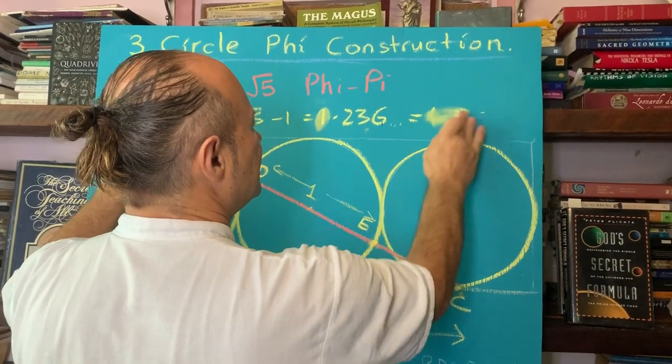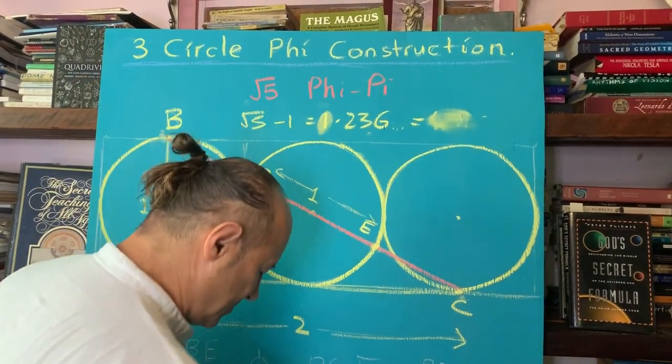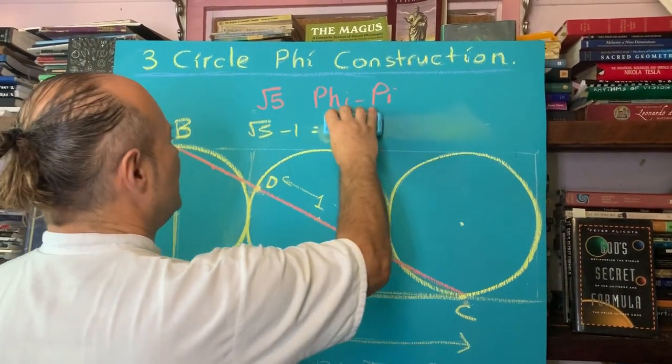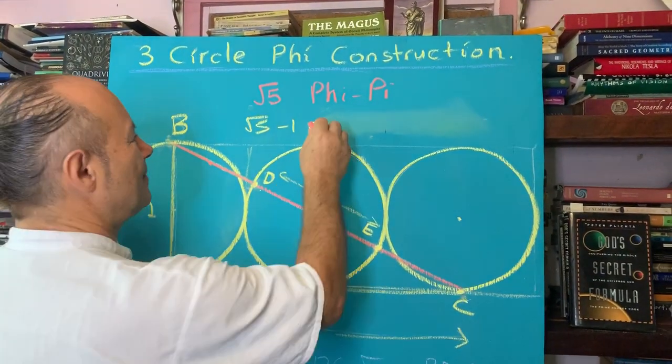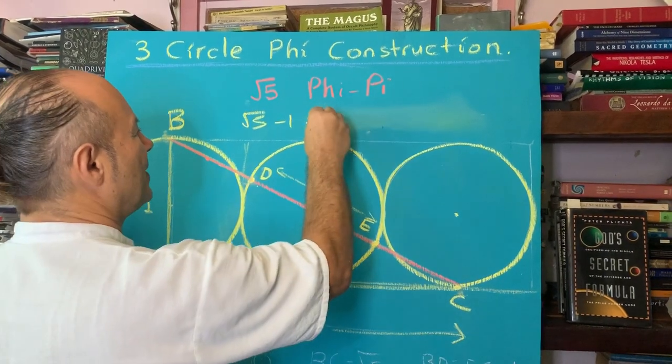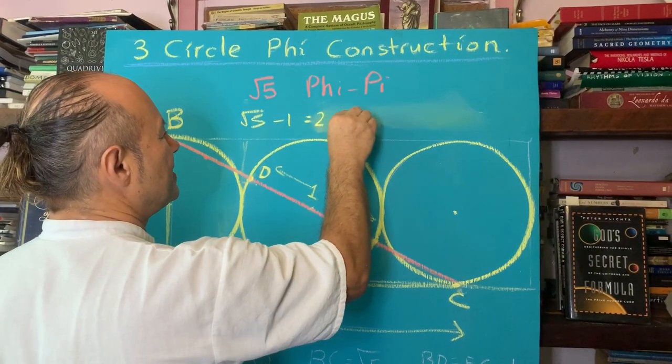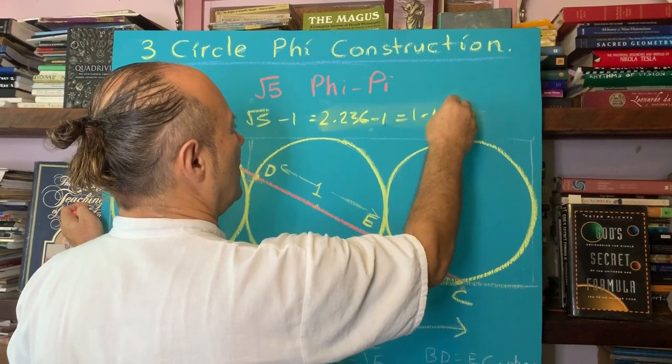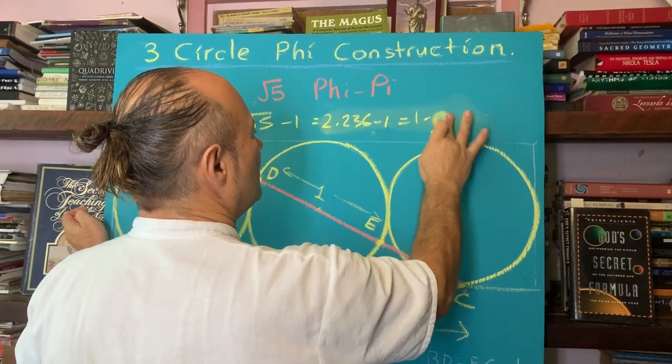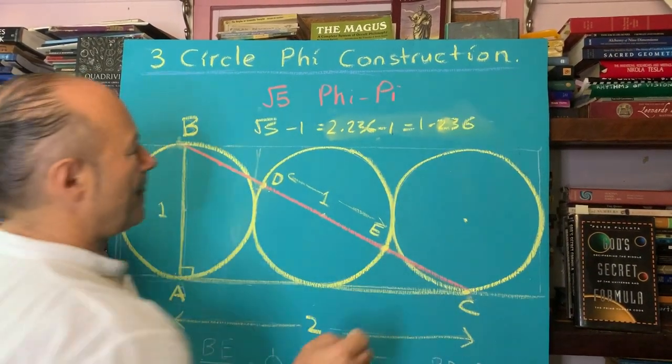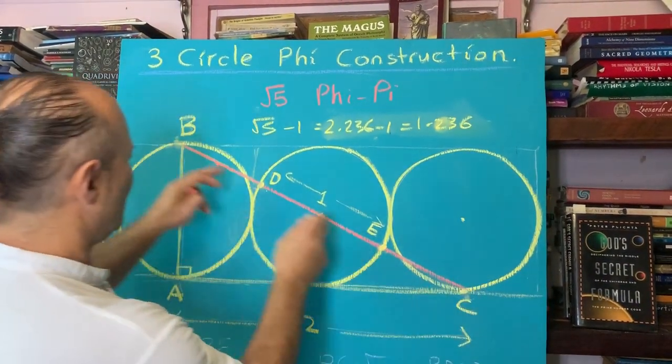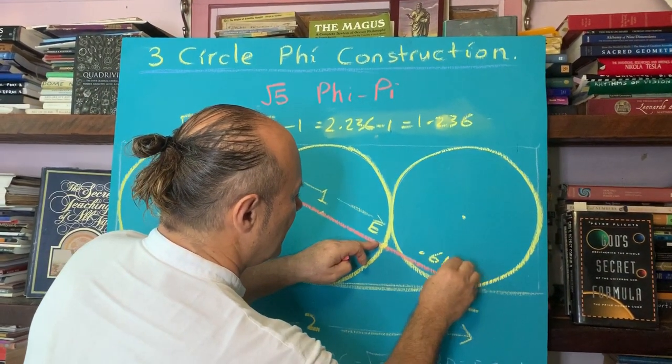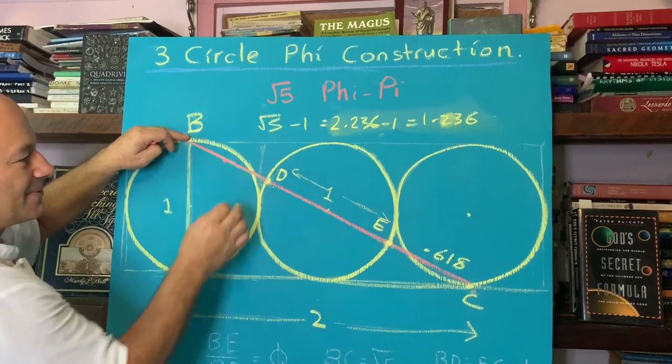So E C and B D equals 1.118. No, sorry. They equal 0.618. I'll just do that again. Sorry. I'll rub... Sorry, I've messed up that. I'll do this again. So root 5 minus 1 is 2.236 minus 1 equals 1.236. And then we're going to halve each one of these. And what we get is 0.618. So this distance 0.618 and this distance 0.618.